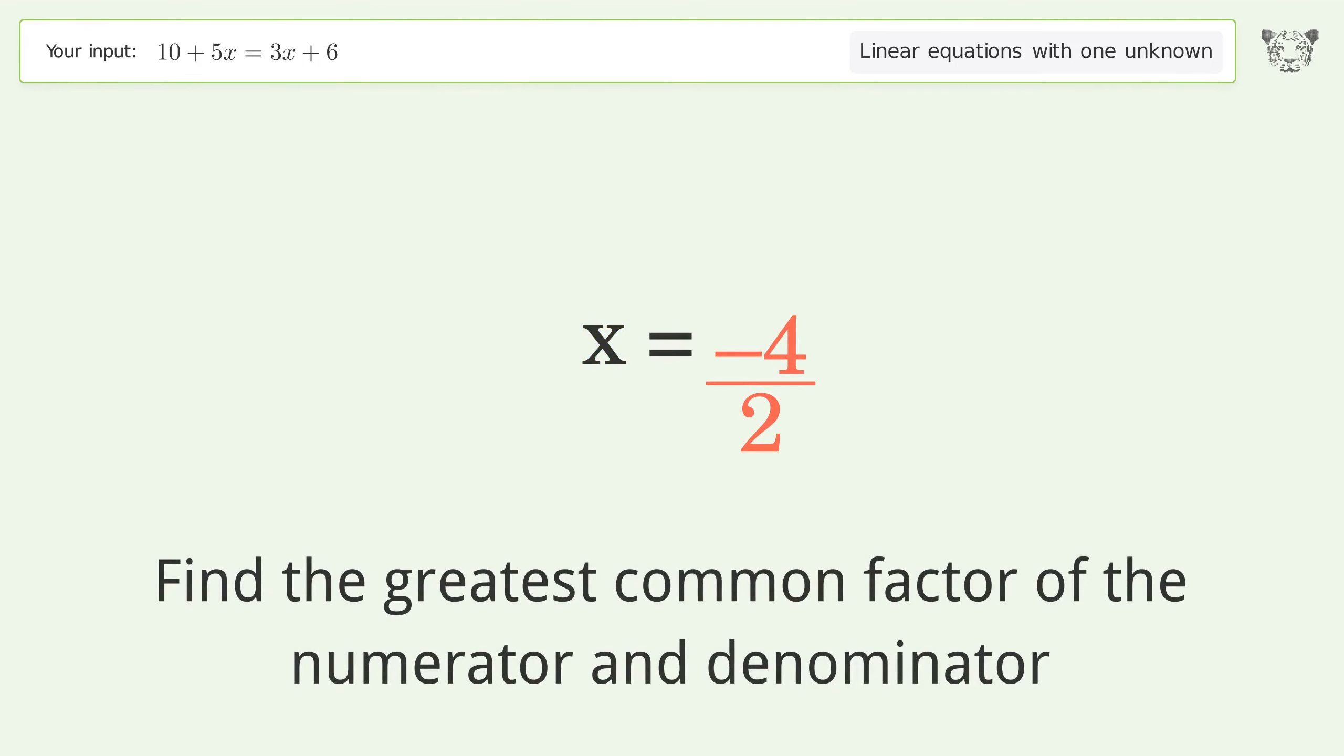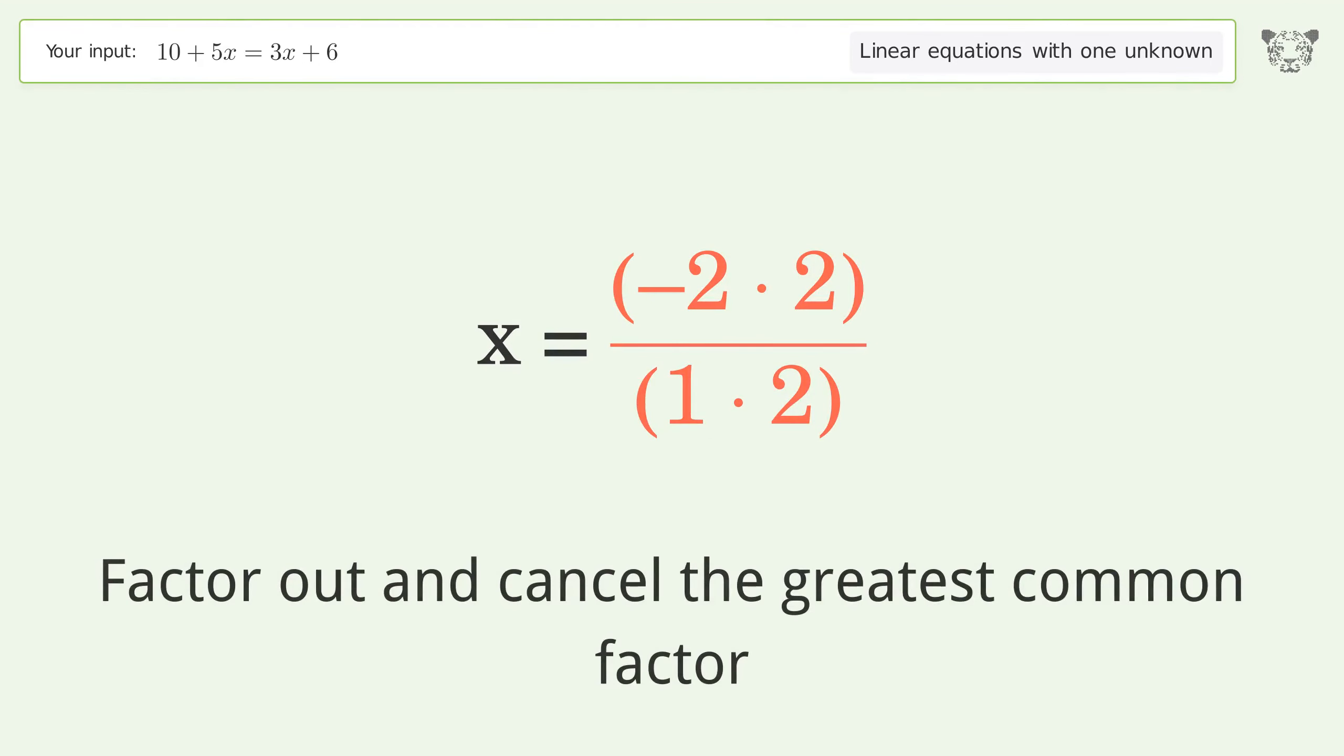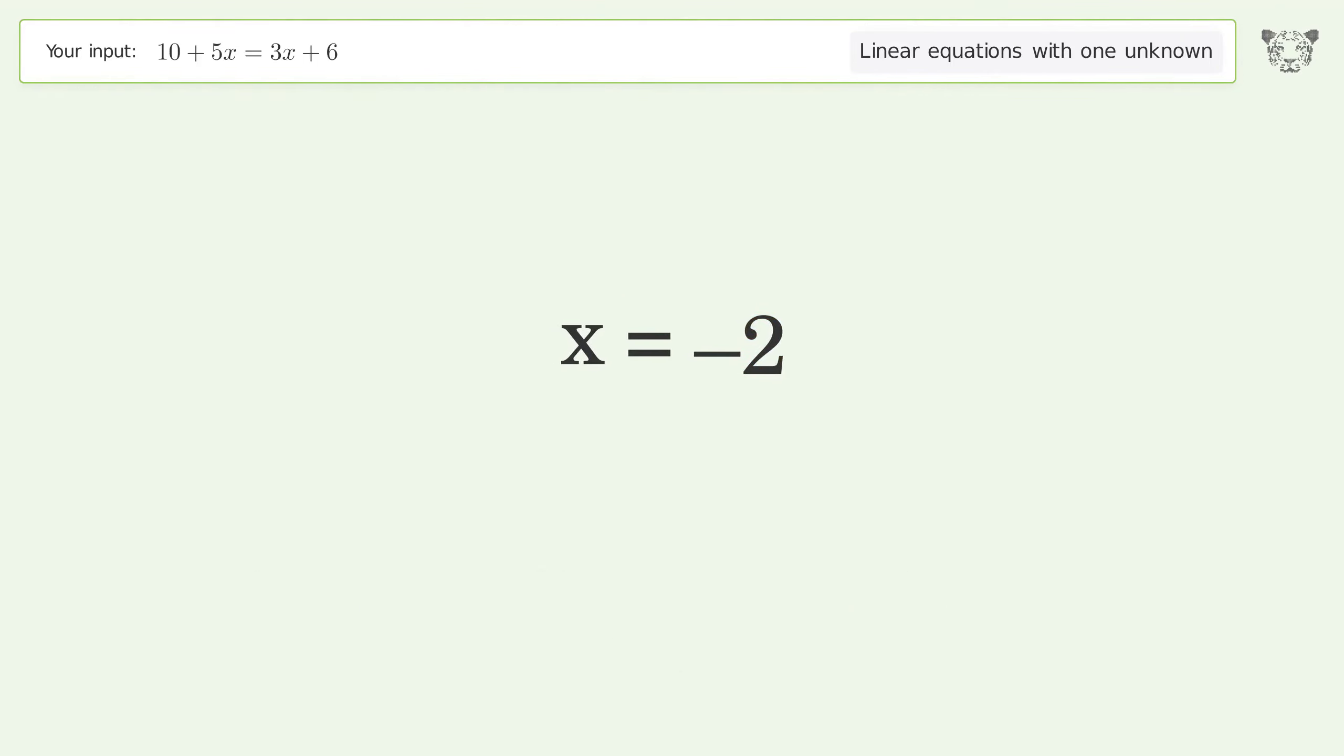Find the greatest common factor of the numerator and denominator. Factor out and cancel the greatest common factor. And so the final result is x equals negative 2.